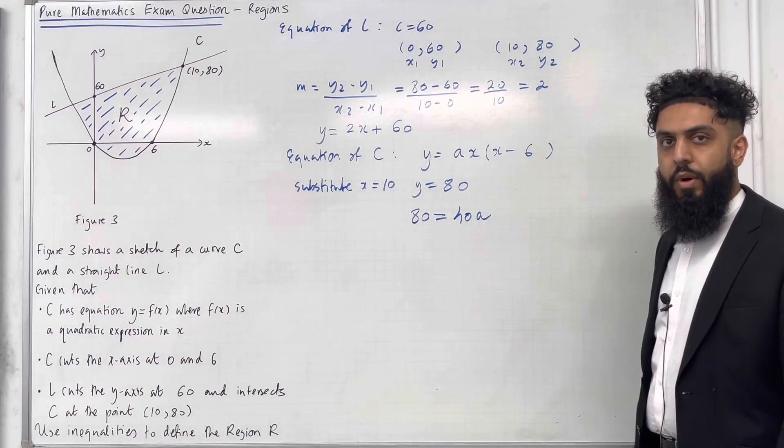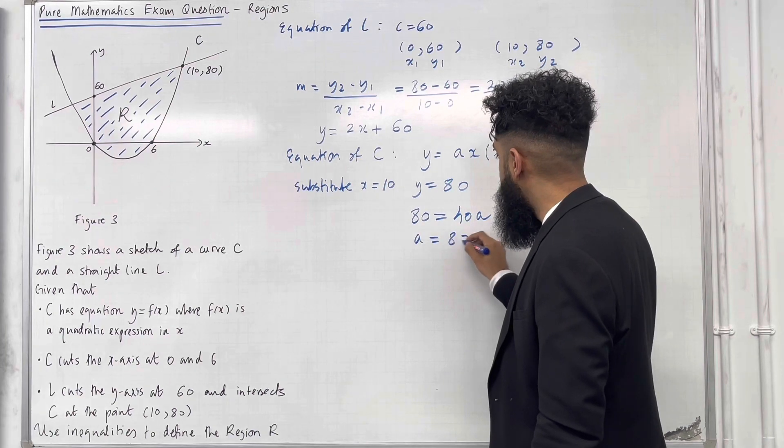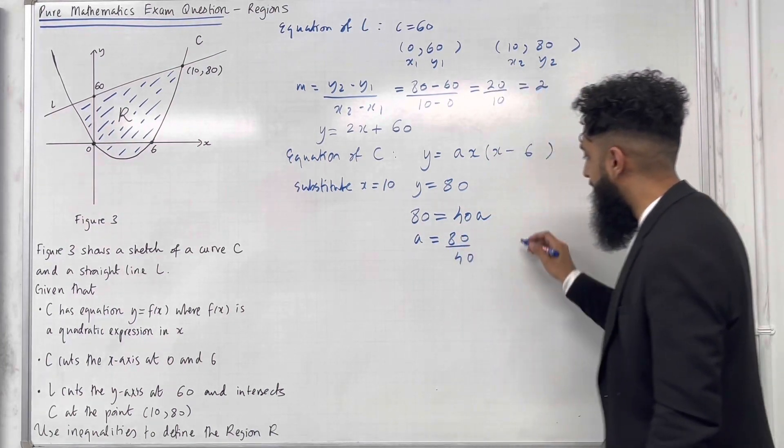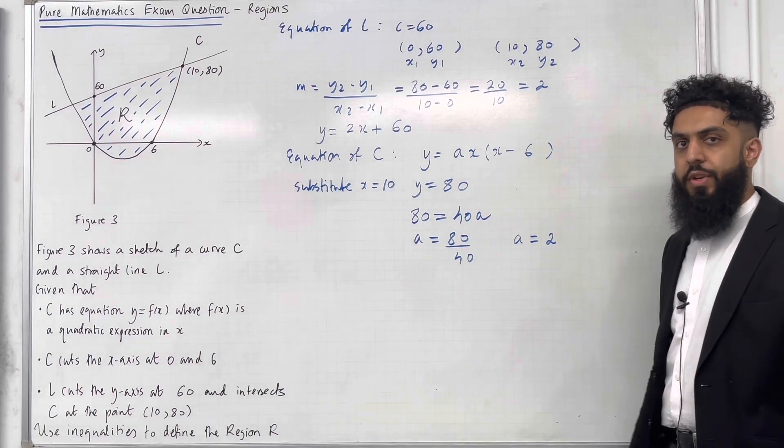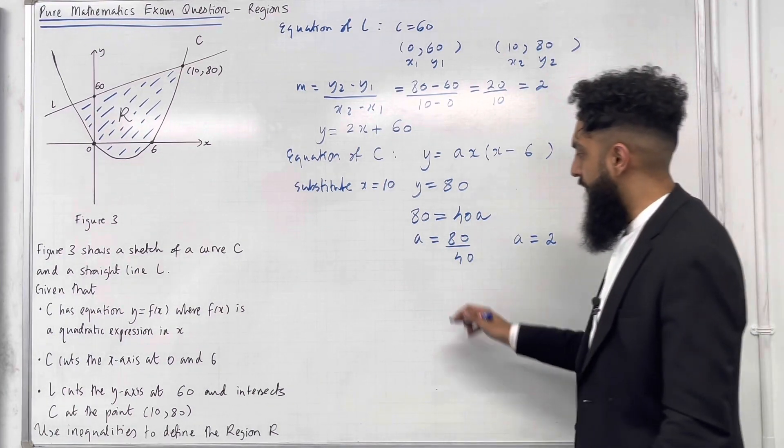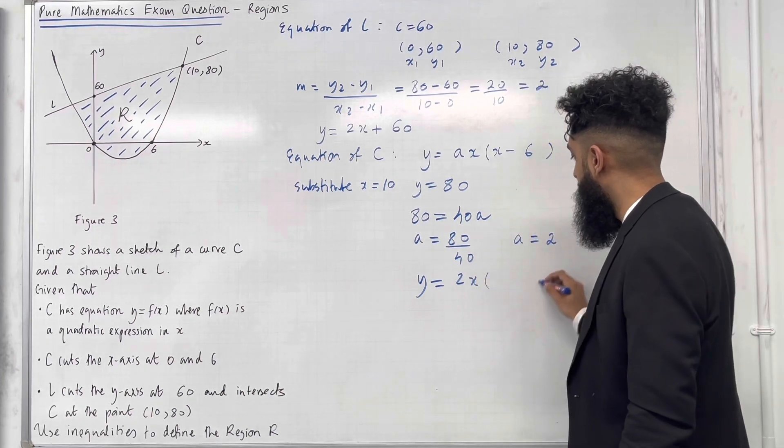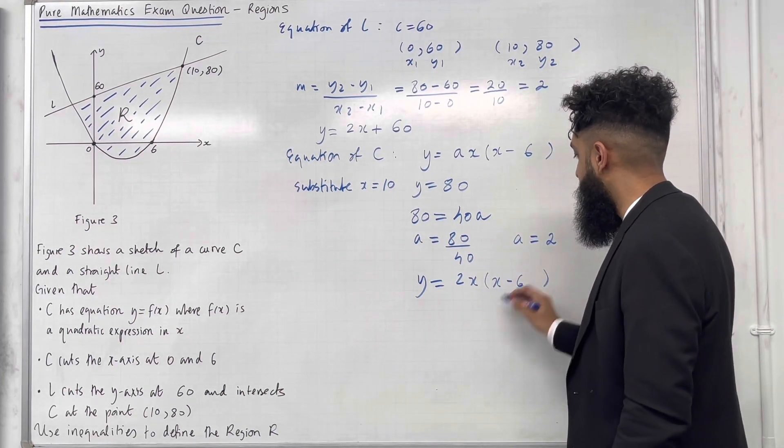Now I can solve for A. So A is equal 80 divided by 40. Hence A is equal 2. So my complete equation for the quadratic is Y equal 2X in bracket X minus 6.